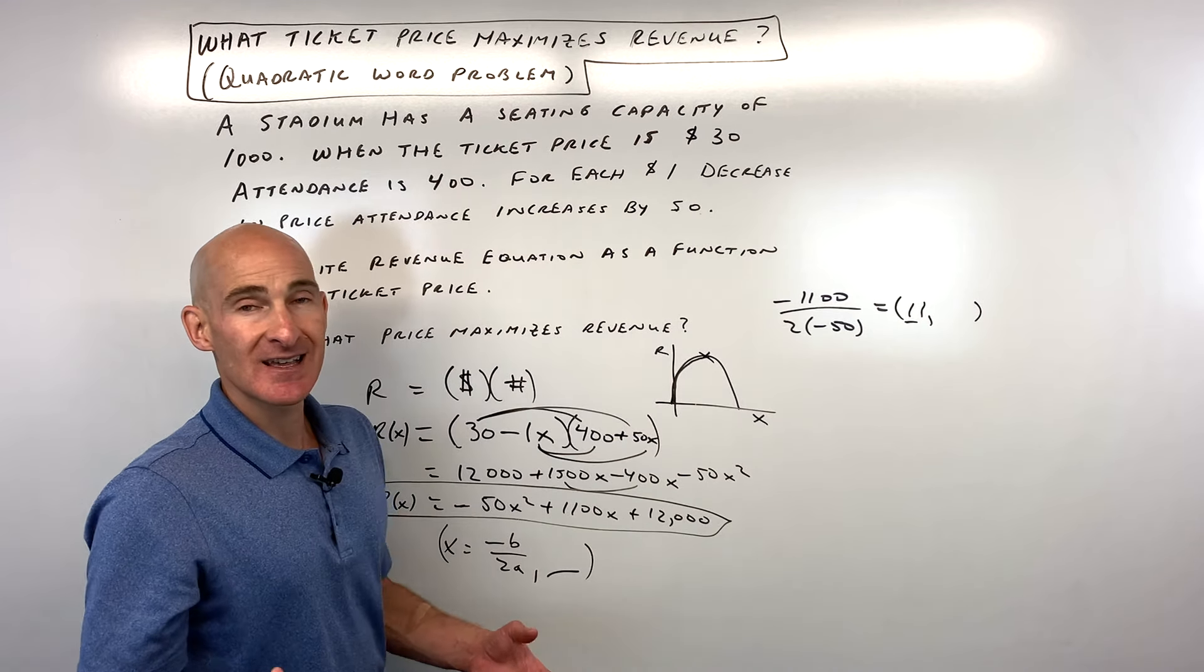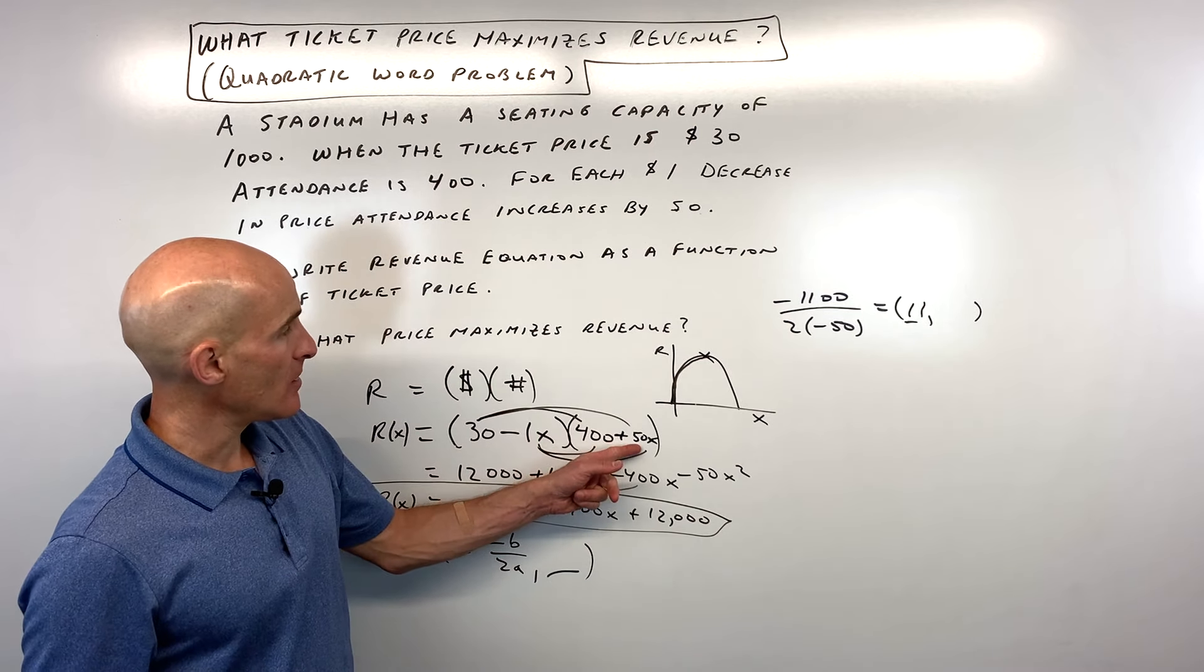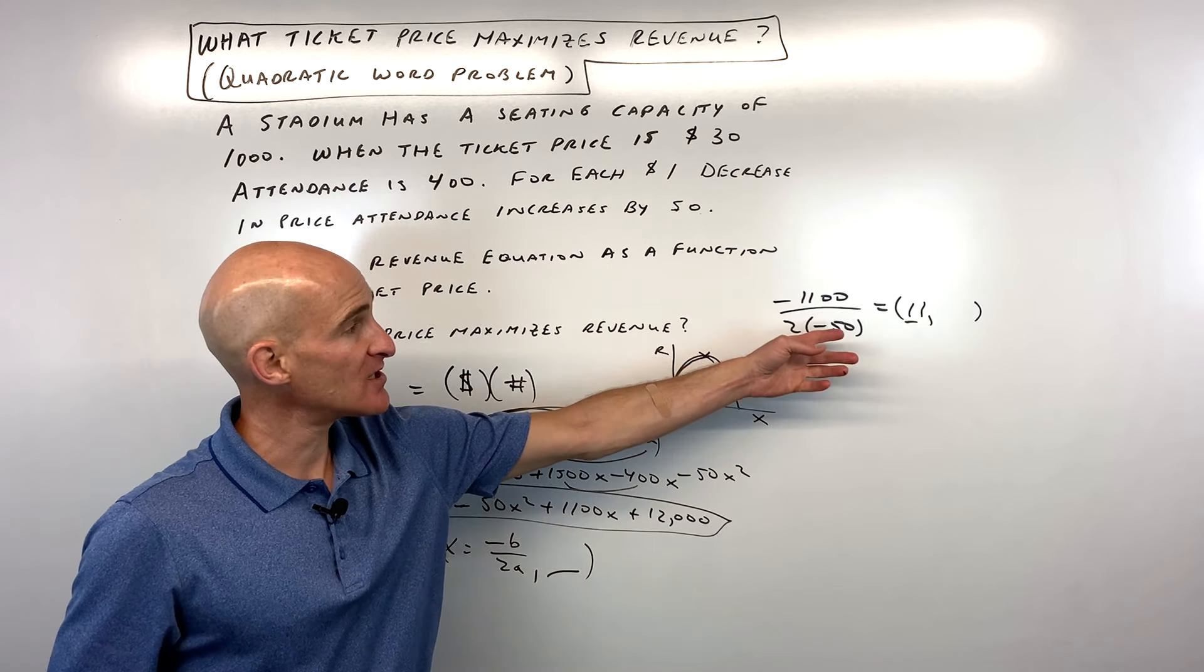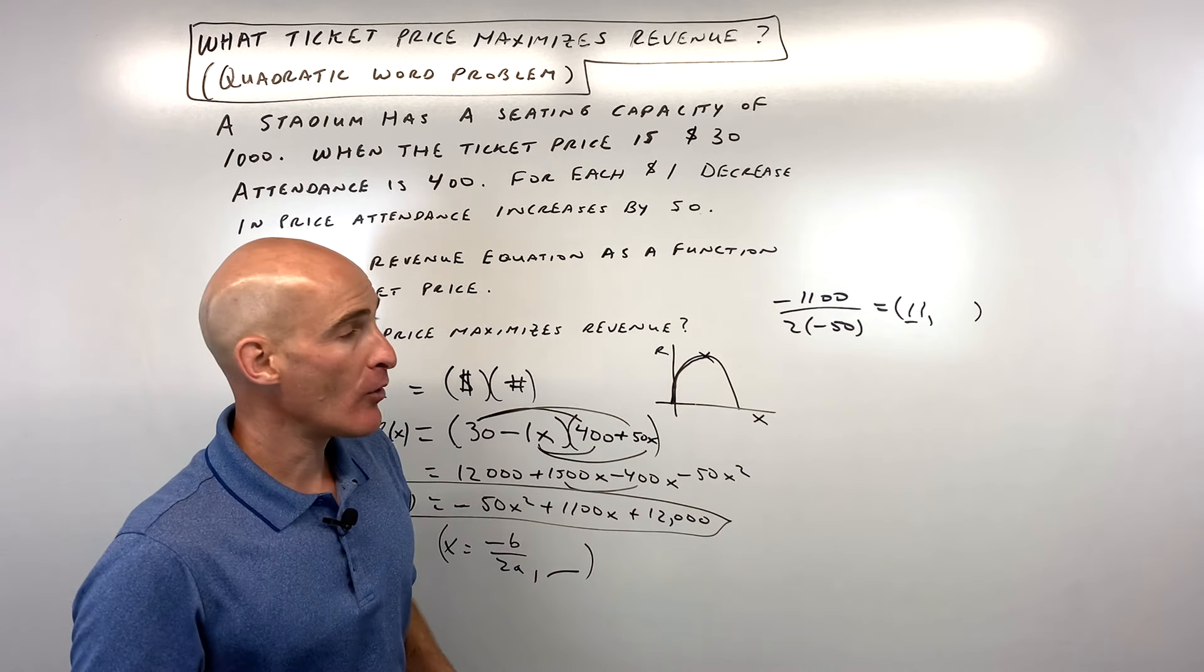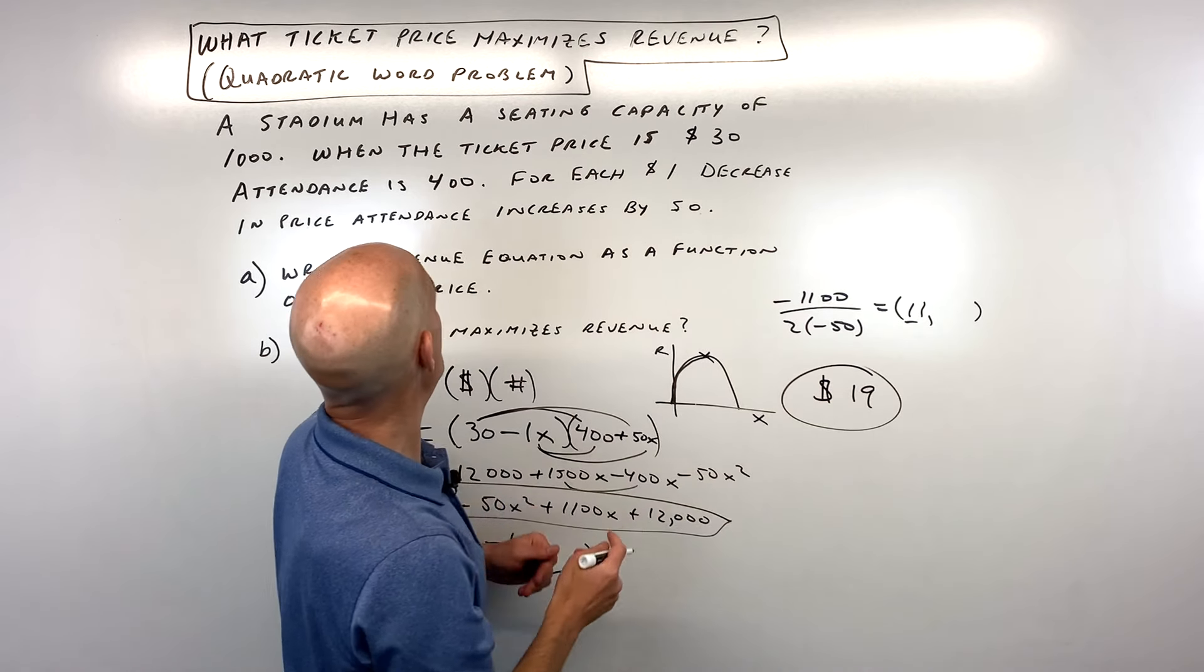So what the 11 represents is 11 one dollar price decreases. That's what the x is here. But originally it was 30 dollars. So if we decrease it 11 times, now the price of a ticket is going to be 19 dollars. And that's what it was asking for.